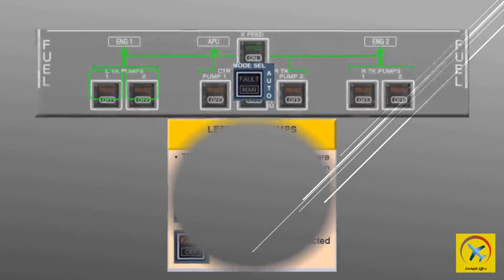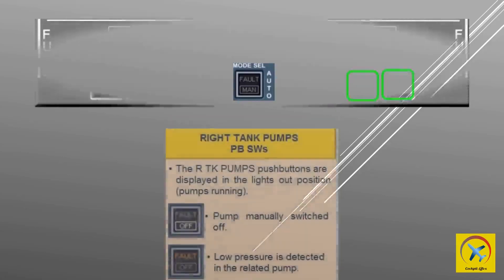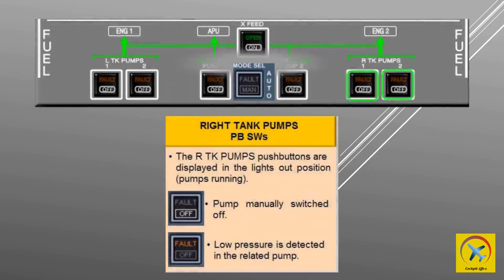The left tank pump push buttons are displayed in the lights-out position when pumps are running. An OFF white legend appears when the pump is manually switched off. If the fault light appears, low pressure is detected in the related pump.